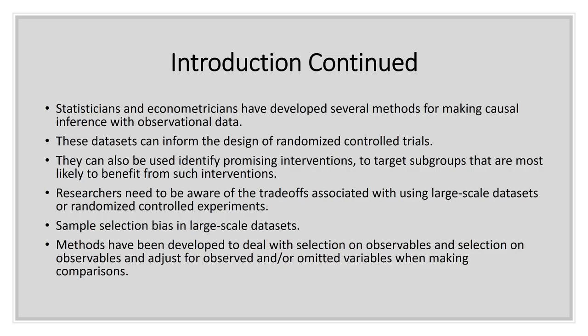We know there are trade-offs in using one type of analysis over another. The randomized controlled experiment has specific strengths, but it also has weaknesses. The same is true for large-scale data sets — one challenge being that you have to know how to use them correctly. Some drawbacks of the RCT design are that it can be very difficult to run an experiment, and oftentimes it's actually unethical to run the types of experiments we would like to run. So we're left devising techniques to estimate assumed causal relationships between a treatment and an outcome.